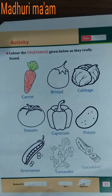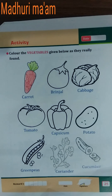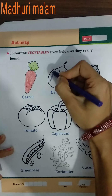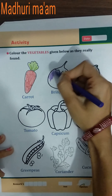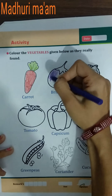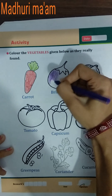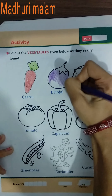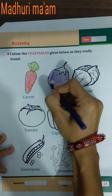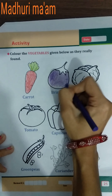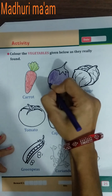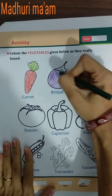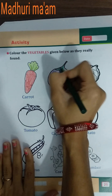Next picture is brinjal. What is the color of brinjal? Violet color. So do violet color here. This is the king of vegetables — brinjal is the king of vegetables. Do violet color in the brinjal picture, and on the upside there is dark green color.